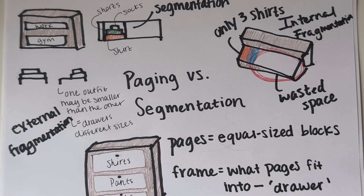Paging is like sorting by type — consistent but wasteful inside. Segmentation is like sorting by use — flexible but messy between. Two ways to keep memory organized. Which one's in your drawer?